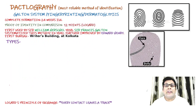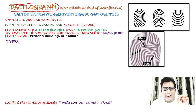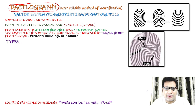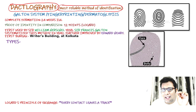Dactylography is the study of fingerprints. The study of epidermal ridges is known as Dactylography. It is the most reliable method of identification, including in identical twins. In identical twins, the method of choice is Dactylography. It is also known as the Galton system.